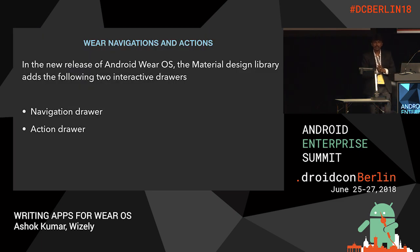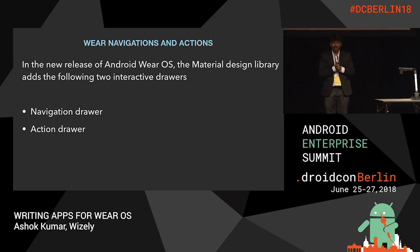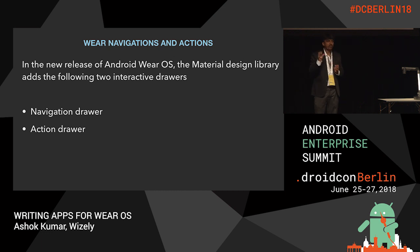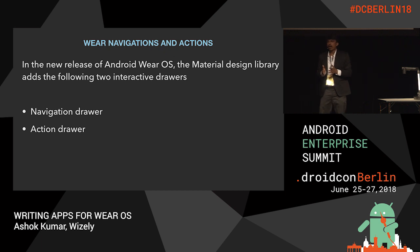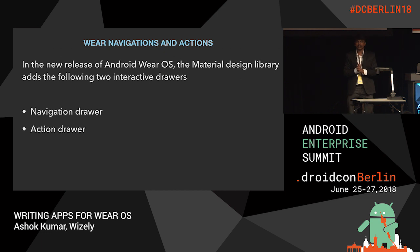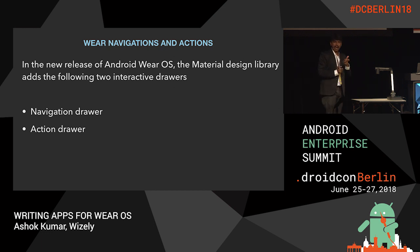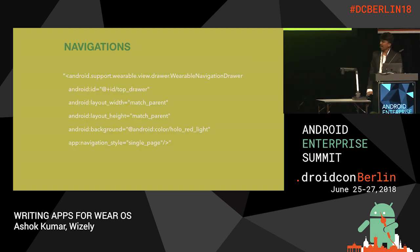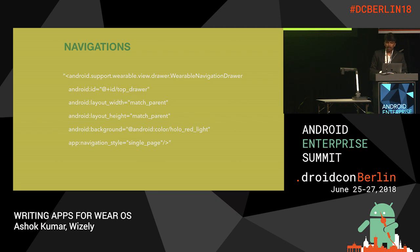And Wear navigations. To cut down all the actions wearables had, in Wear 1.x there was a grid pager which had too many paginations to perform one action — users had to go through all tiles. But that has been eradicated. We now have very straightforward approaches like navigation drawer and action drawers. These components are directly similar to material design navigation drawers in mobile apps.